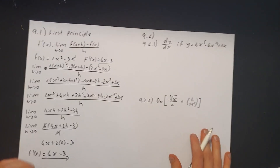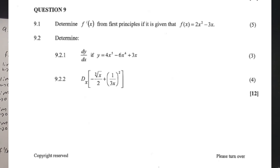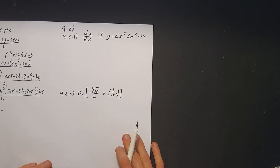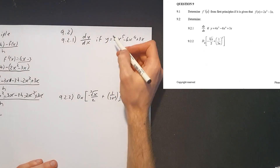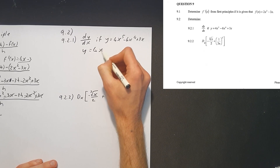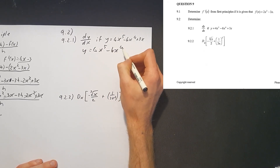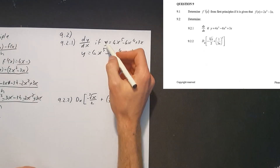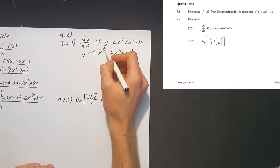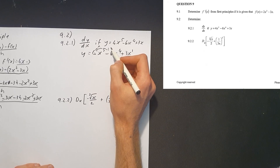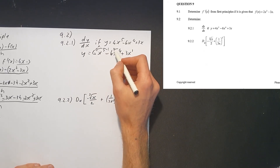Now looking at 9.2.1 — they're asking us to find the derivative, dy/dx, the rate of change of this function. We can use the easy method for this one. So let me write it out: y equals 4x to the 5 minus 6x to the 4 plus 3x to the power of 1. The power rule says take the exponent, multiply it by the front, and then minus 1 off — do this for all terms.